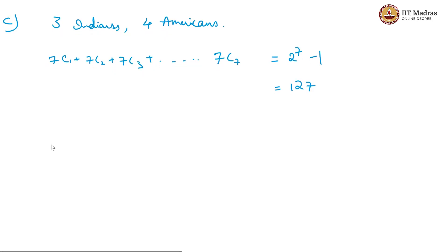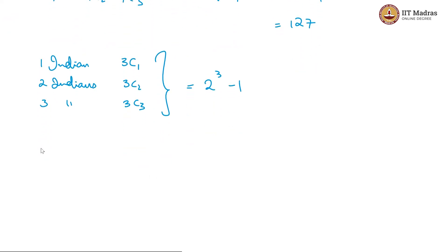Of these, we should remove the cases where there are no Indians or no Americans. So, the cases where there are no Americans, let us take for example, then you can pick one Indian or two Indians or three Indians. So, that will be 3C1 plus 3C2 plus 3C3, which again is equal to 2 power 3 minus 1. And similarly, if we choose one American or two Americans or three Americans or four Americans without any Indians, you will get 4C1 plus 4C2 plus 4C3 plus 4C4, which is equal to 2 power 4 minus 1. This is 7 and this is 15. So, of the total possibilities, we are subtracting 7 plus 15, which gives us 127 minus 22, which is equal to 105.